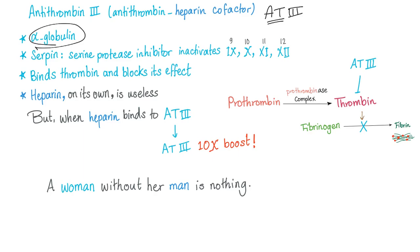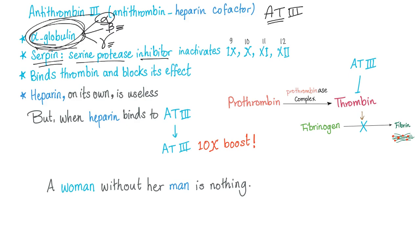Antithrombin 3 is an alpha-globulin. We have globulin, albumin, and three types of globulin: alpha-globulin, beta-globulin such as coagulation factors, and gamma-globulin such as immunoglobulins or antibodies. Antithrombin 3 is an alpha-globulin. It's a serpin — a serine protease inhibitor. It inactivates the serine proteases such as factors 9, 10, 11, and 12. It also binds thrombin and blocks its effect.